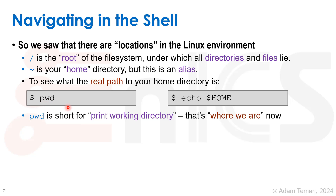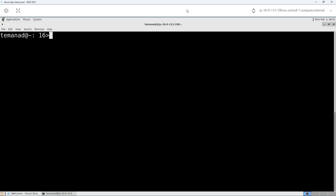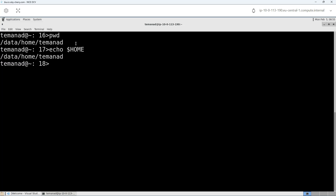We can also see what the directory is by looking at another environment variable called HOME. echo $HOME will show us what our home is and it will be the same as our tilde. This concept of where we are is really important — everything we do relative is relative to where we are now. Running pwd shows slash data slash home slash teamAd — that is my home directory. I can also do echo $HOME and it returns the same thing.